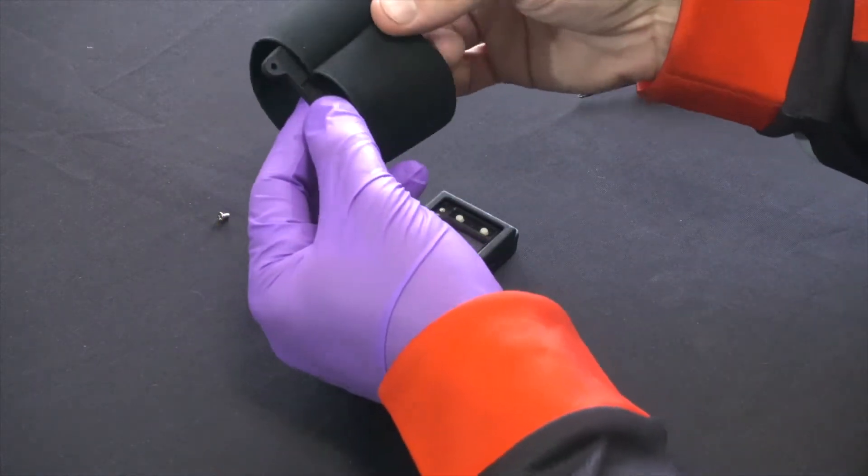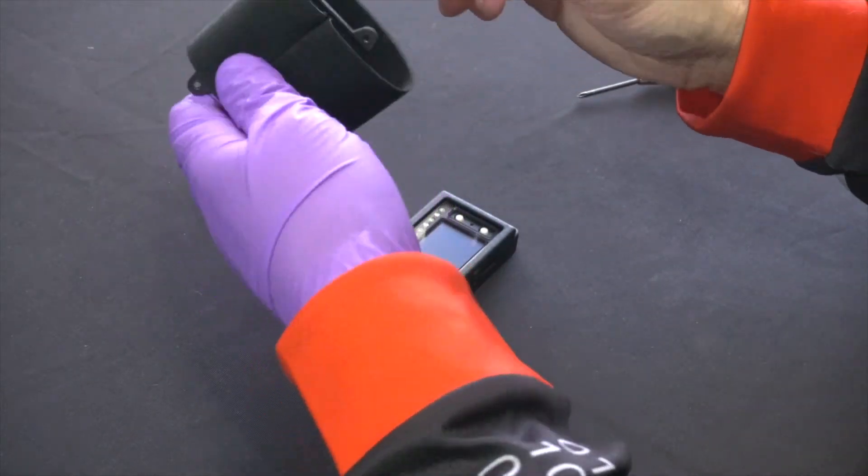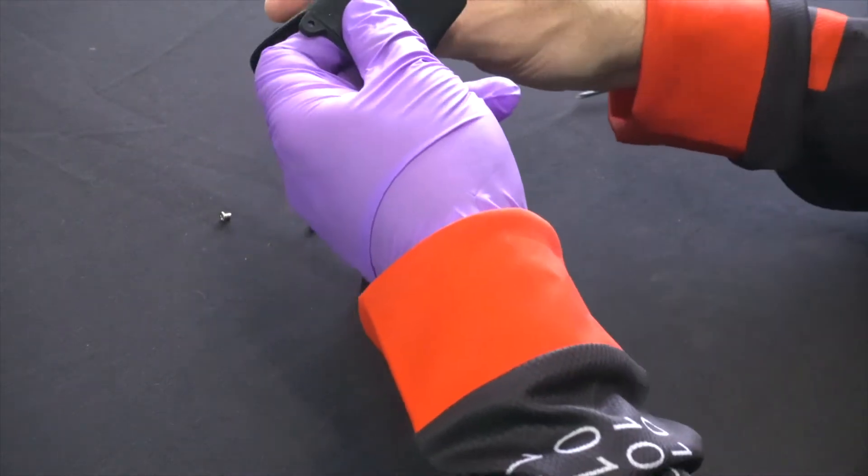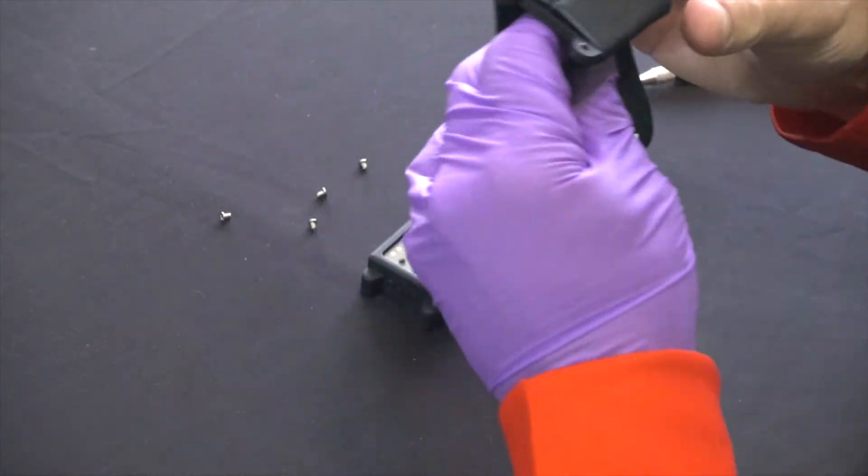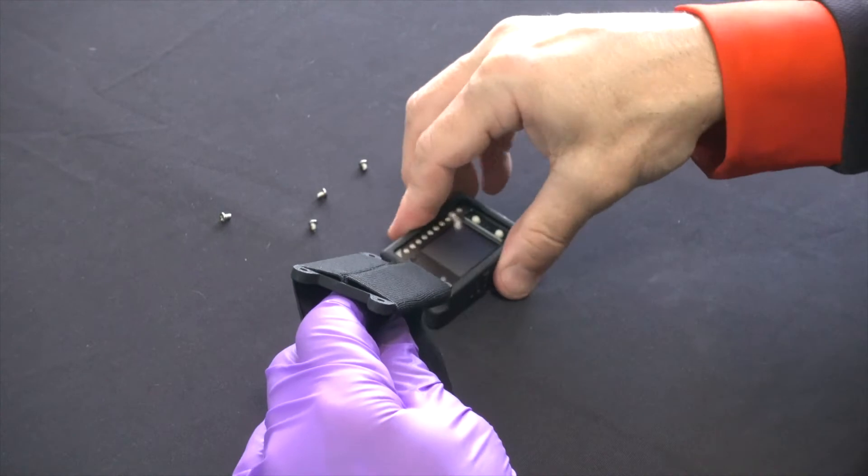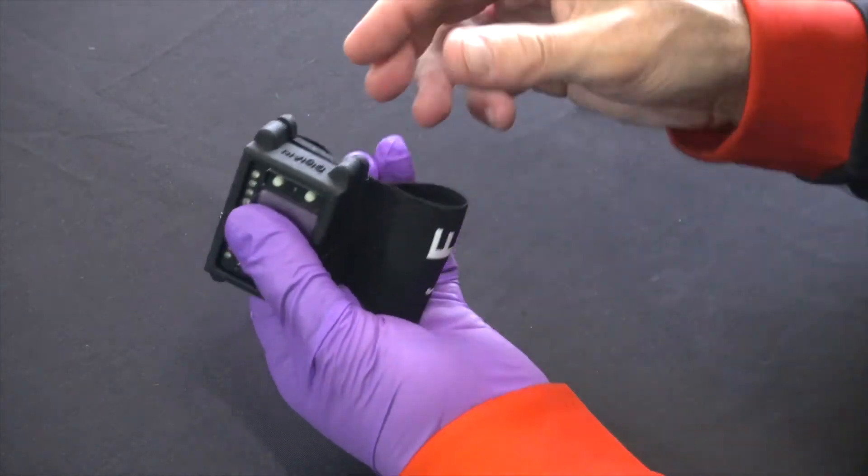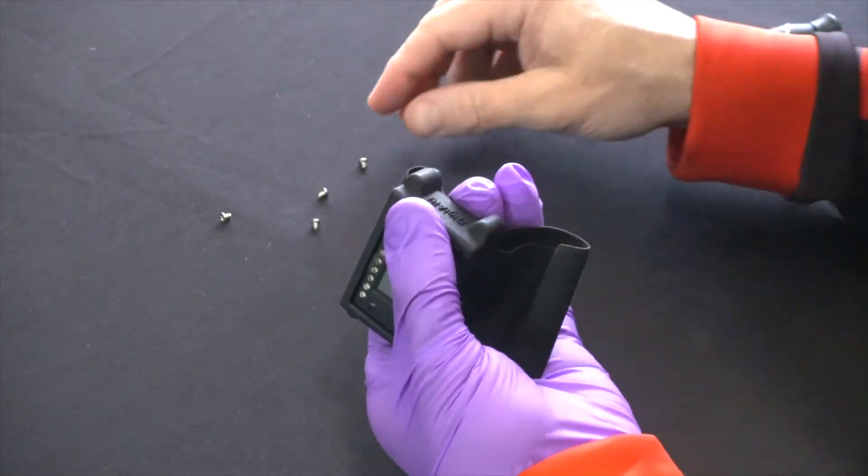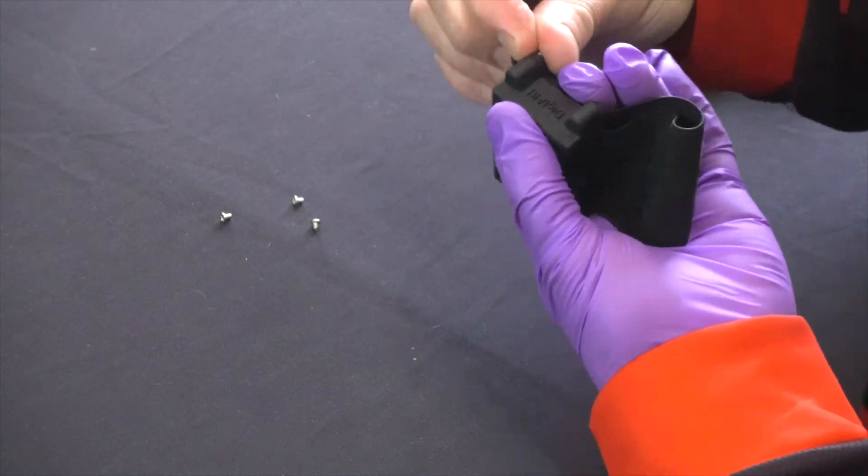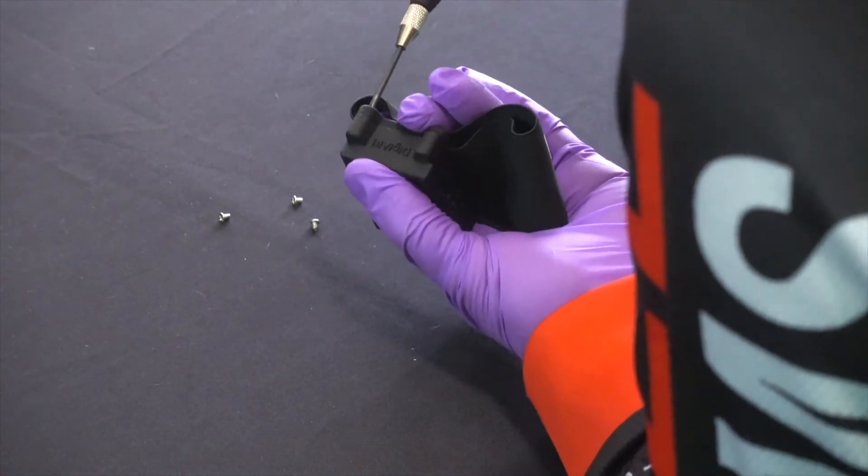So what you want to do here is kind of pull it taut like this, and then we can literally hold this on there and begin screwing it together. We're going to alternate corners here, so I'm going to do this corner.